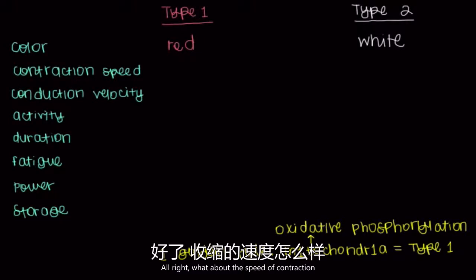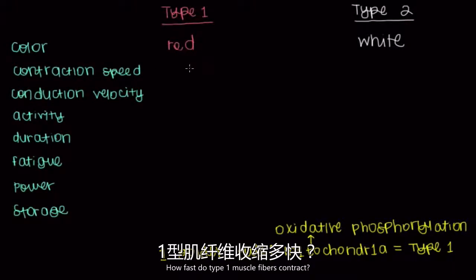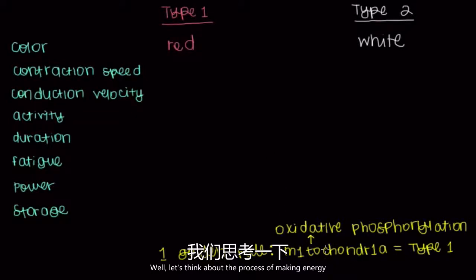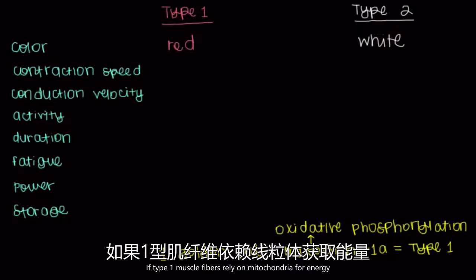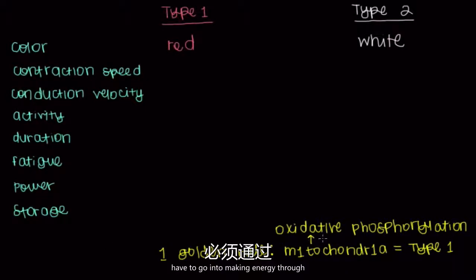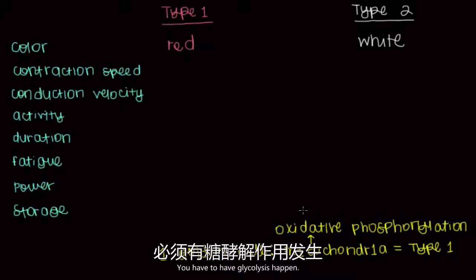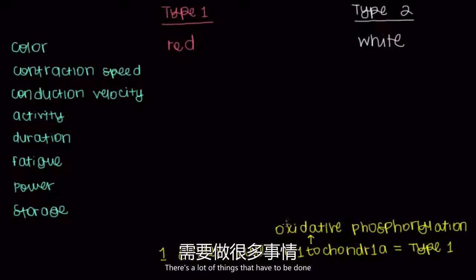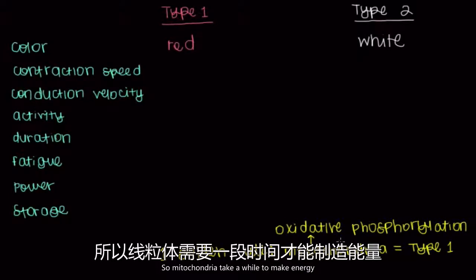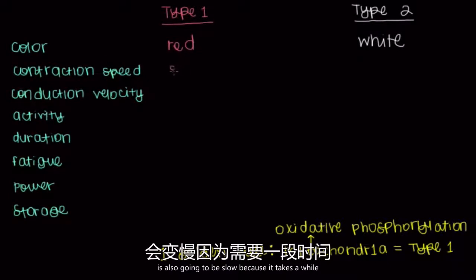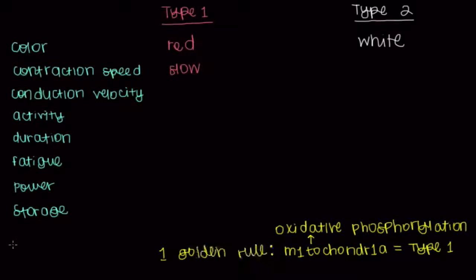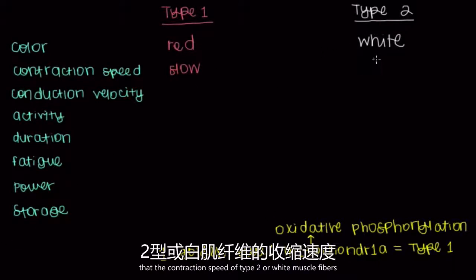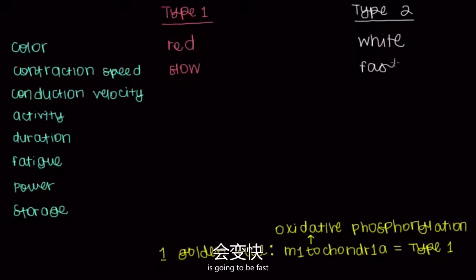How fast do type 1 muscle fibers contract? If type 1 muscle fibers rely on mitochondria for energy, think about all the processes involved in oxidative phosphorylation — you need glycolysis, the Krebs cycle, NADH and FADH2, all these cofactors going into the electron transport chain. There's a lot that has to be done, so mitochondria take a while to make energy, meaning contraction speed is slow for type 1. On the flip side, contraction speed of type 2 or white muscle fibers is fast.